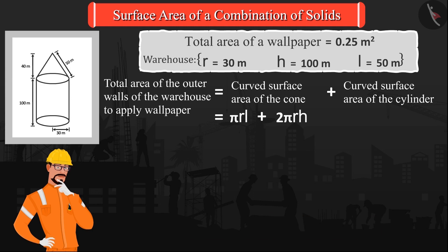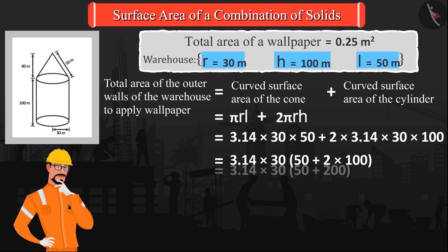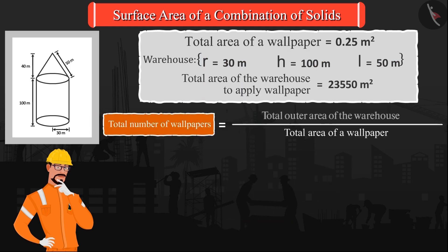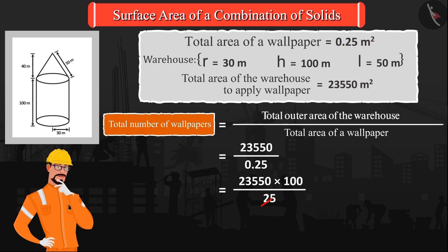Brilliant! Now, let's solve by substituting all the values. From this, we get to know that the total area of the outer walls on which the wallpaper is to be applied is 23,550 square meters. Now, we will divide this area by the area of a wallpaper so that we get the total number of wallpapers needed.